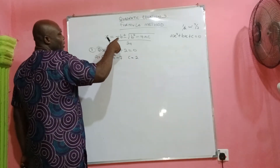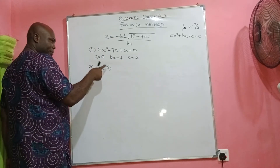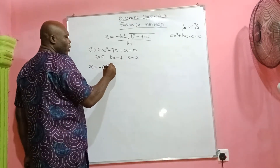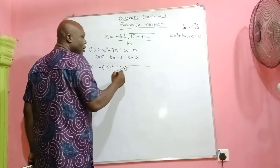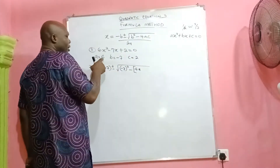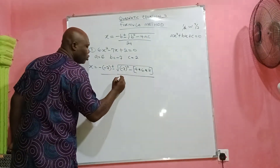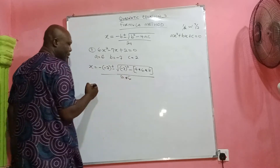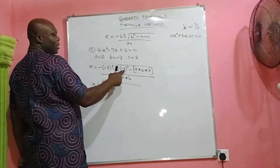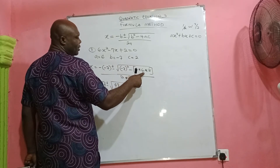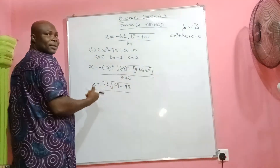So x = −b. Our b is −7, so −(−7) = +7. Plus or minus the square root of b squared — that's (−7)² = 49 — minus 4ac, which is 4 × 6 × 2. That's 4 × 6 = 24, and 24 × 2 = 48. All over 2 times a, which is 2 × 6 = 12. So x = 7 ± √(49 − 48), all over 12.